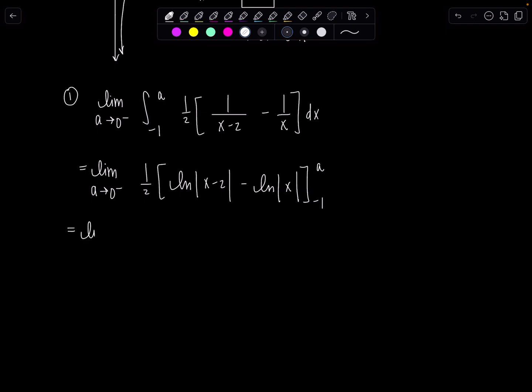And then let's see. So limit a approaches zero from the left, one half. ln absolute value a minus two minus ln absolute value negative one minus two plus ln absolute value negative one.